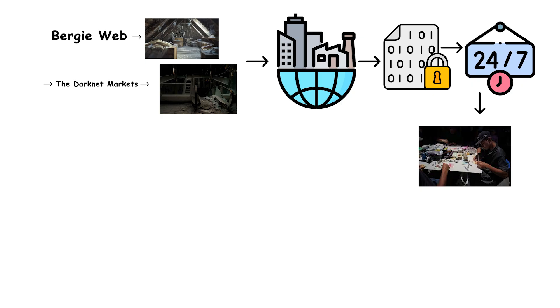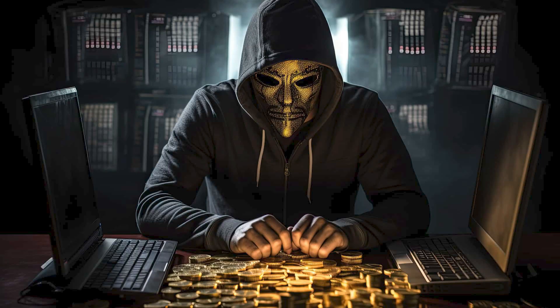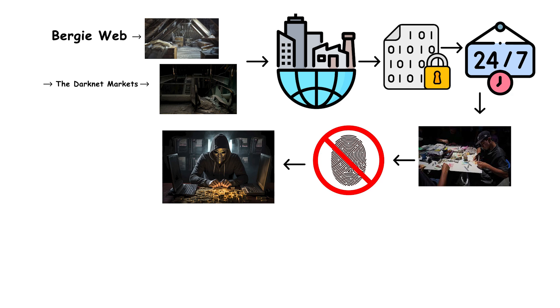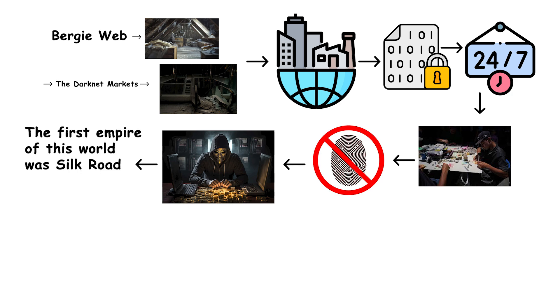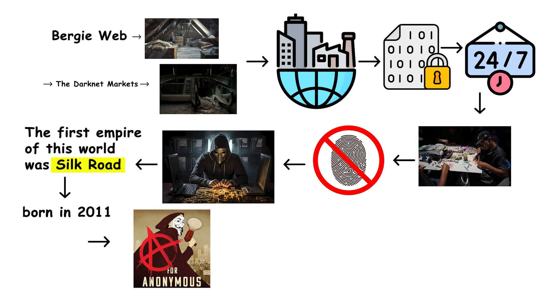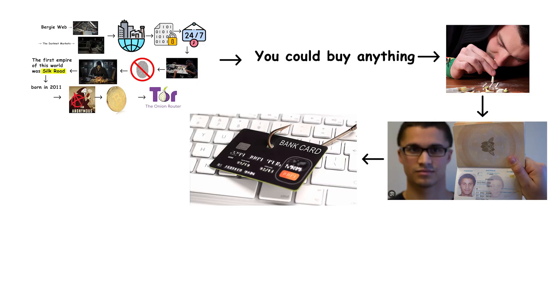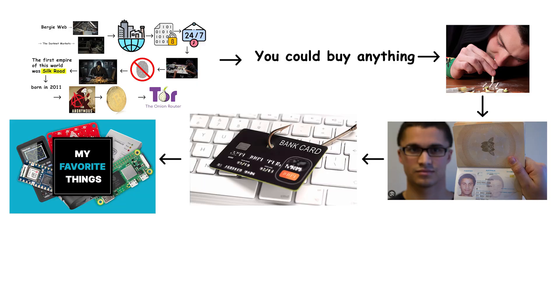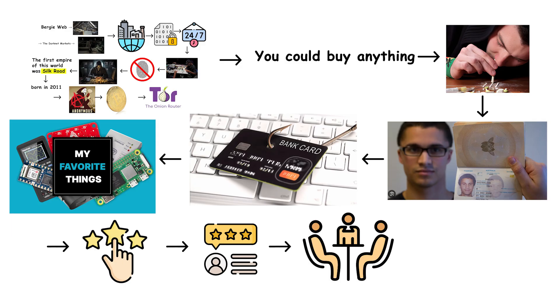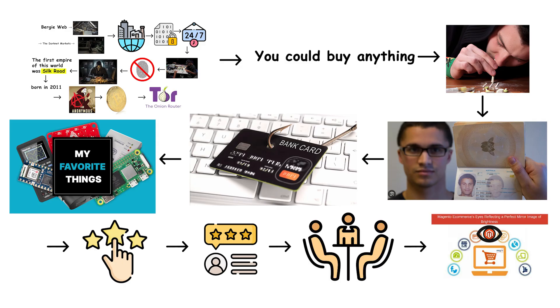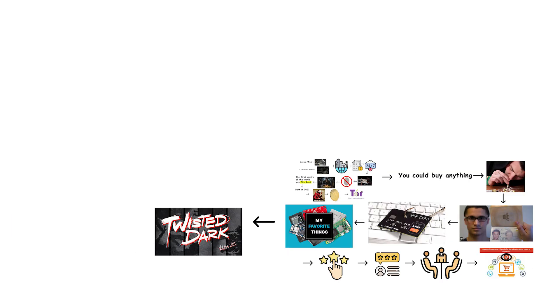Every transaction happens in silence, every deal leaves no fingerprints, and every user is both merchant and suspect. The first empire of this world was Silk Road, born in 2011 — an Amazon for the anonymous, powered by Bitcoin and protected by Tor. You could buy anything: narcotics, fake passports, stolen credit cards, even hacking tools with customer support. It had ratings, reviews, dispute resolution — a perfect mirror of e-commerce, twisted for the dark.